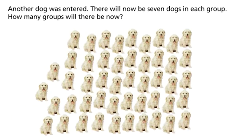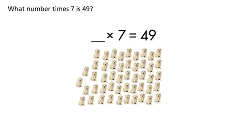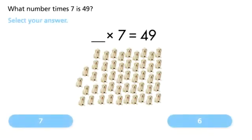Another dog was entered. There will now be seven dogs in each group. How many groups will there be now? What number times seven is 49? Select your answer.